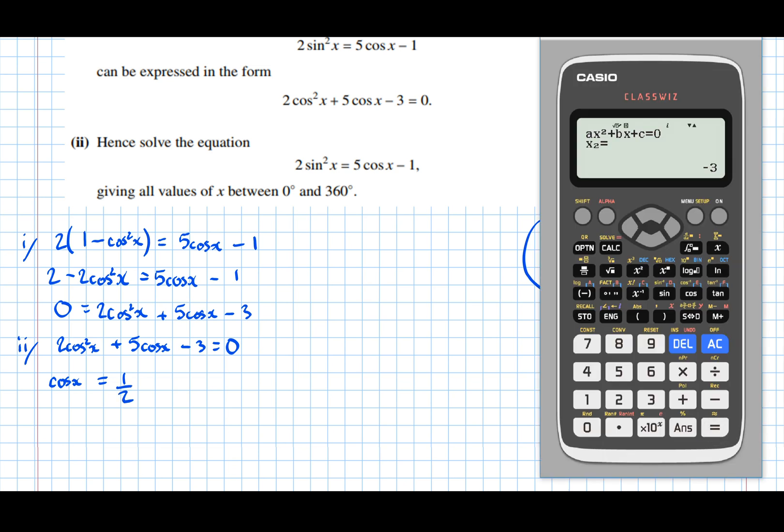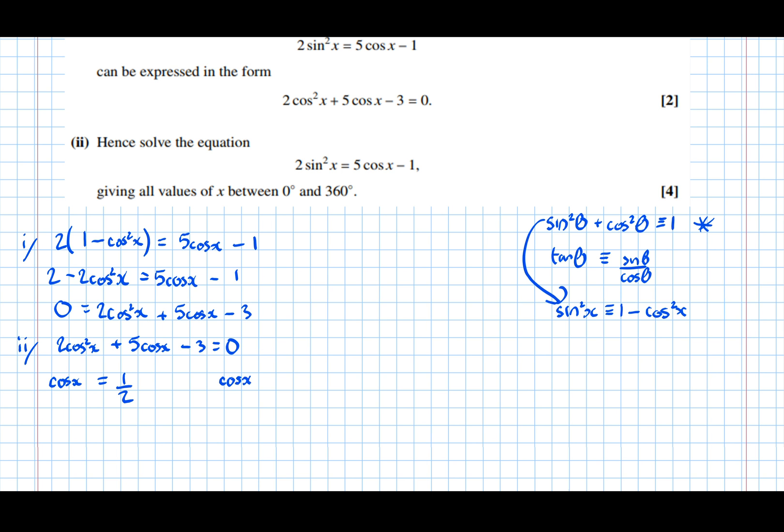Press equals again to get cos x equals minus 3. Now, alarm bells should ring at this point, because the cos function only goes all the way up to 1, and all the way down to minus 1, so there's no way cos can take a value of minus 3, so that must be an invalid solution. So just cross it out, and write next to it, invalid.